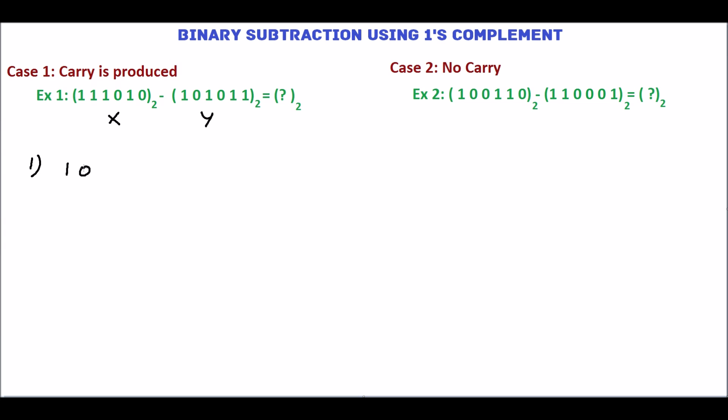y is 101011. To find 1's complement, just we have to change all 1's to 0 and all 0's to 1. 0 becomes 1, 1 becomes 0, 0 becomes 1, 1 will be 0. This is 1's complement.